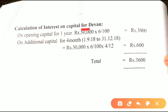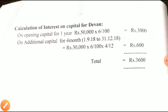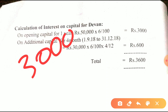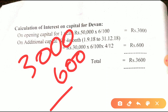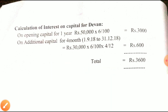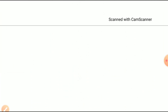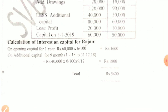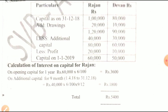Devan's additional capital is for 4 months: 30,000 into 6 divided by 100 into 4 divided by 12 equals 600. So 3,000 plus 600 is 3,600. The total interest on capital for both Rajan and Devan is 6,000. Thank you students, you can see the next class.